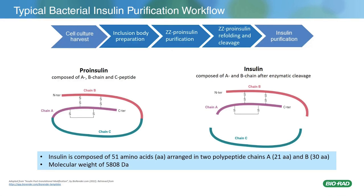I'm not going to go into all the details of all the steps because we're just going to focus on the chromatography, but very briefly, ZZ proinsulin was cloned, expressed, and produced in E. coli as inclusion bodies and then harvested. The ZZ proinsulin inclusion body prep steps include solubilization, sulfitolysis, concentration, and desalting. Then proinsulin is isolated via capture chromatography and refolding, and enzymatic cleavage of proinsulin removes the C-peptide and ZZ tail to obtain insulin.